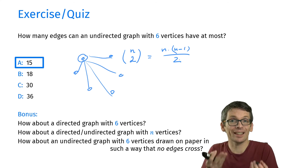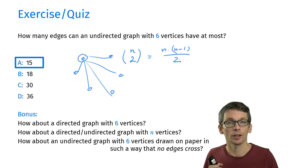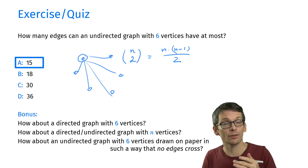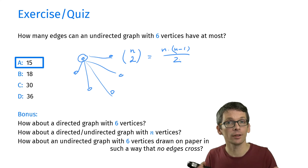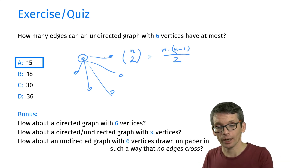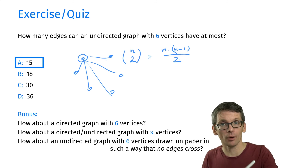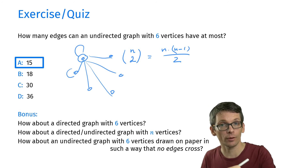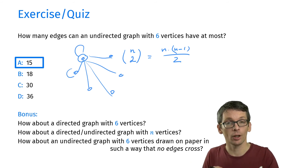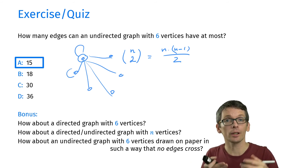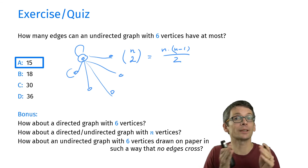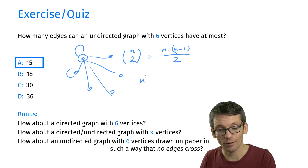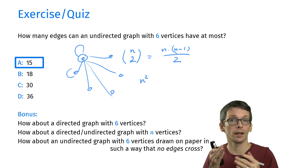In a directed graph with 6 vertices, you can have at most 36 edges: the 15 undirected pairs in both directions gives 30, plus 6 self-loops gives 36. More generally, in a directed graph with n vertices you can have at most n² edges.